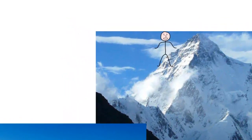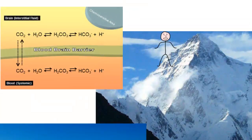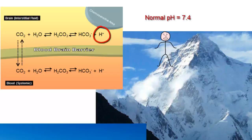To understand how this is occurring, let's think about the relationship between the partial pressure of carbon dioxide and the brain ISF pH. The central chemoreceptors are strictly sensitive to the brain ISF pH, and their goal is to maintain a normal interstitial fluid pH. The brain chemoreceptors are not sensitive to oxygen, so they're unaware that we could become potentially hypoxic as we ascend into altitude. All they're sensitive to is what is the brain ISF pH.